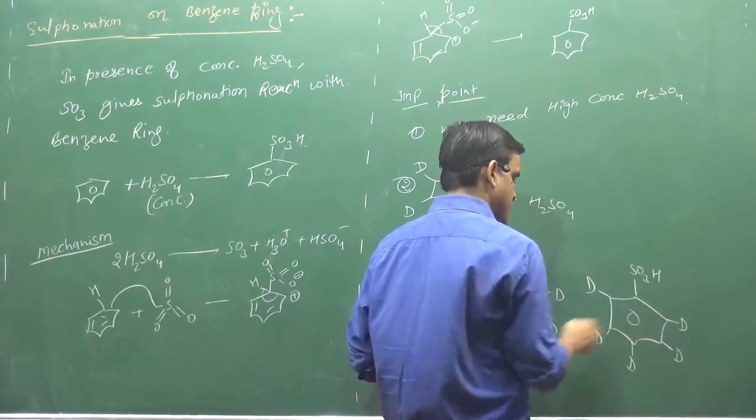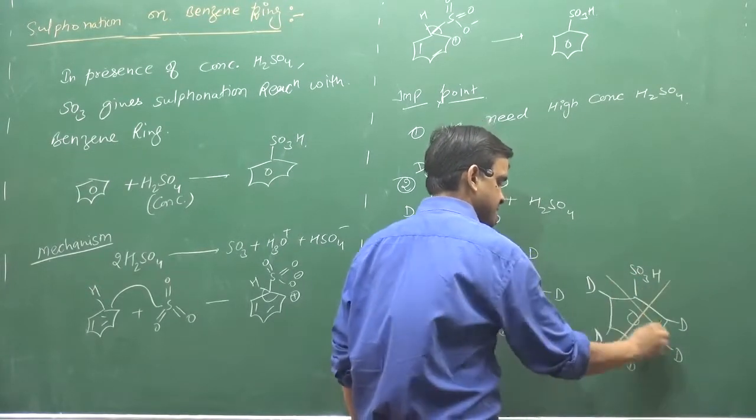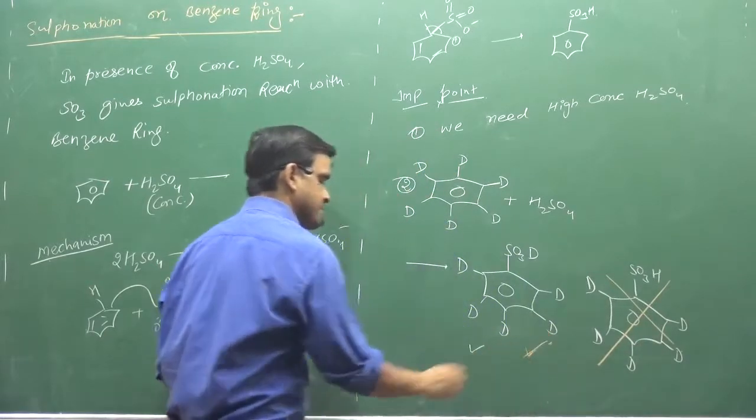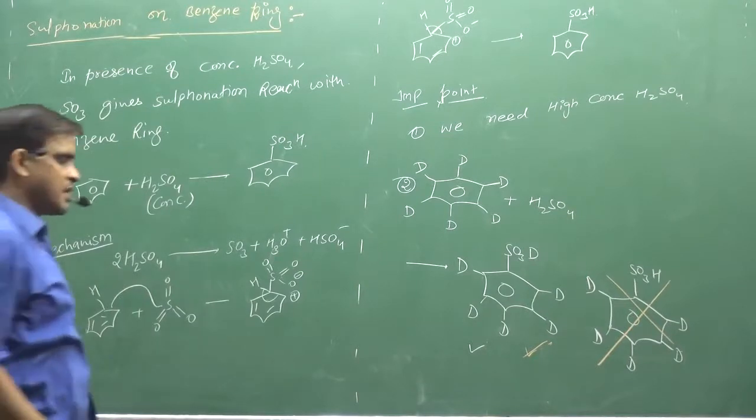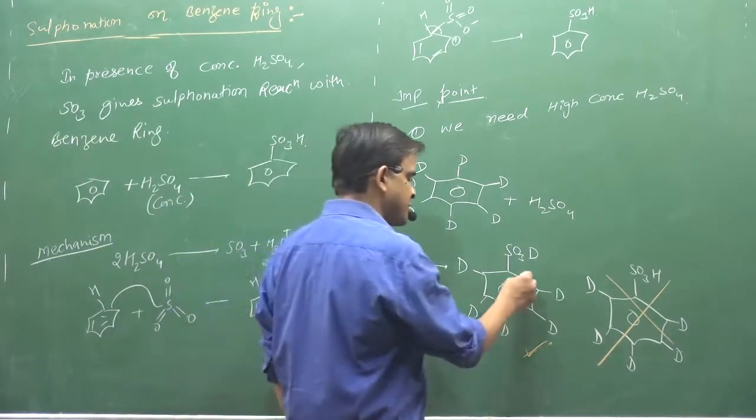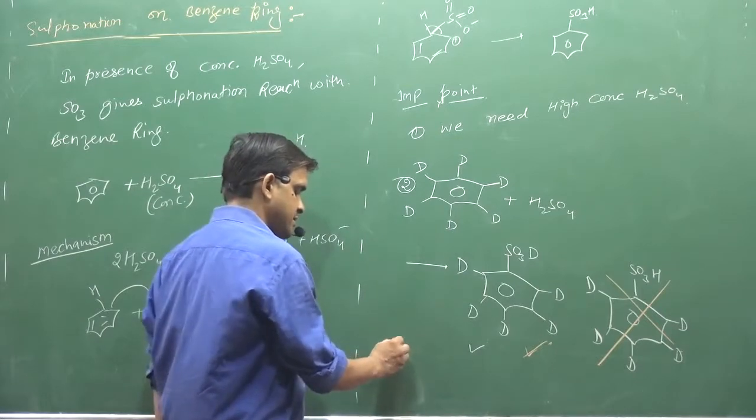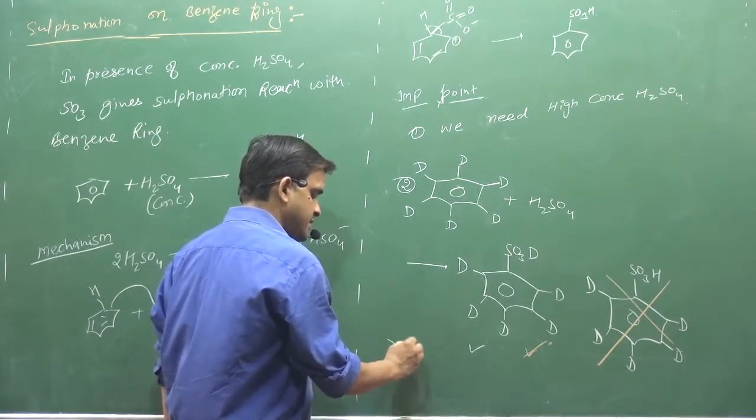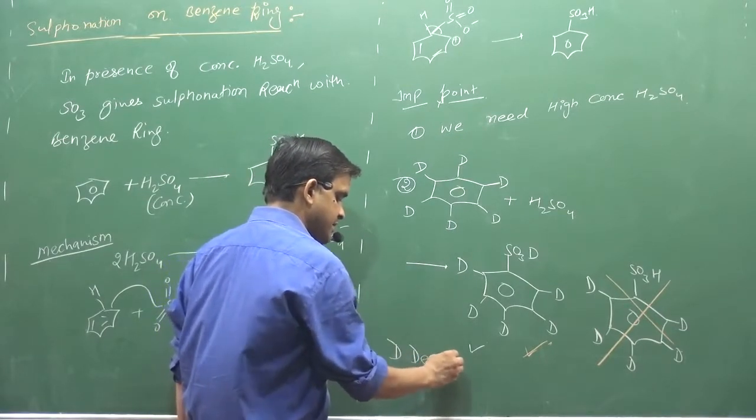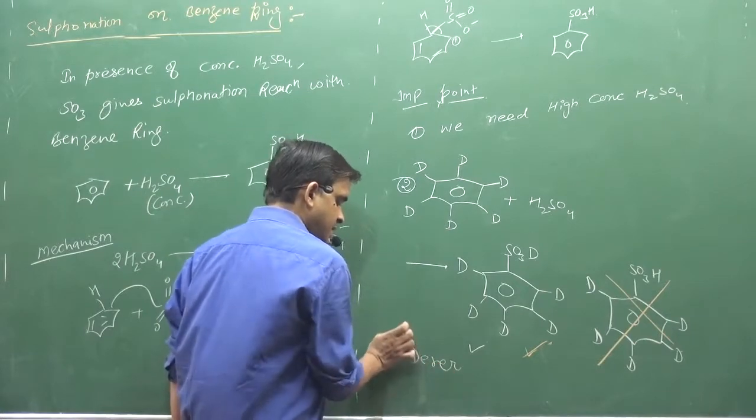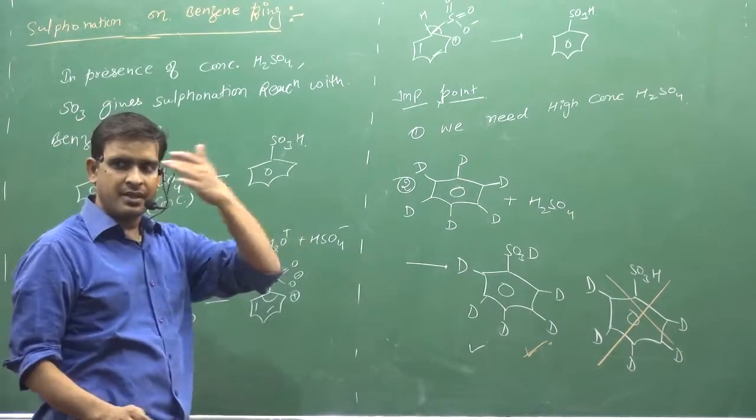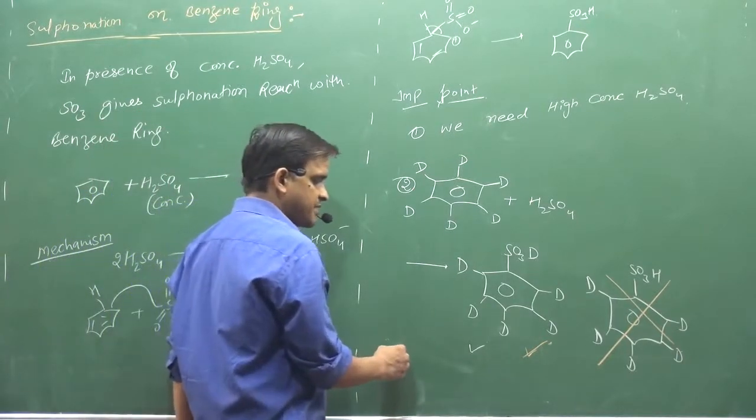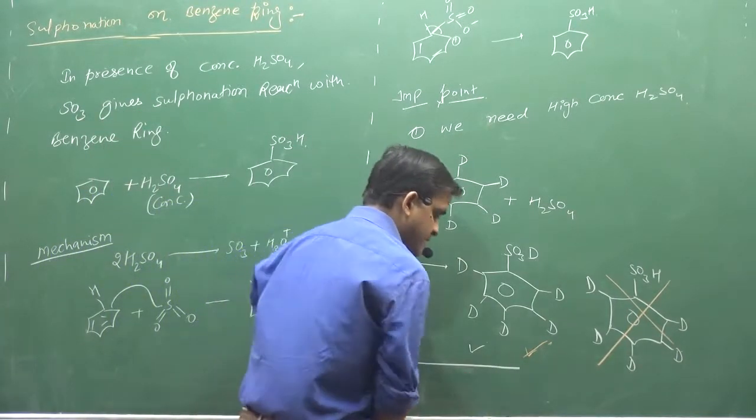With the H2SO4, is it clear? So this decreases the rate. If hydrogen is replaced by deuterium then rate decreases and this effect is called isotopic effect.